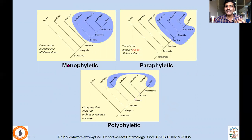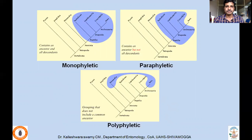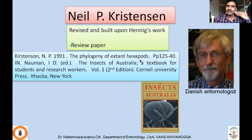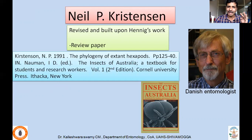Hennig gave due importance to phylogeny and said that monophyly provides a wonderful system of classification which is actually natural. Thereafter, people started thinking about generating a phylogenetic classification. As a result, the Richards and Davies classification, which was widely accepted, was actually changed. Then came Neil P. Christiansen, who was influenced by Hennig's work and published a review paper in a publication called The Insects of Australia, in which he gave a very different classification than previously existed.